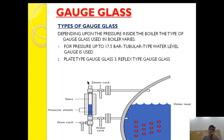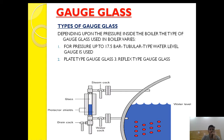So let's start the video on the types of gauge glass. The gauge glass can be defined in three parts: one is the tubular type, second is the plate type, and third is the reflex type. The reflex type gauge glass is a type of plate type gauge glass but with some restrictions in construction. For pressures up to 17.5 bar — that is, medium pressure boilers — the tubular type gauge glass is used.